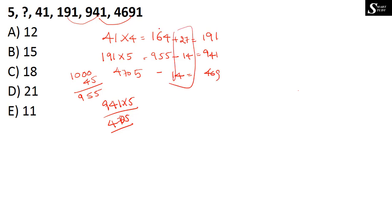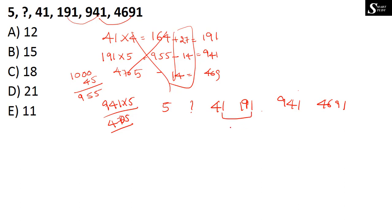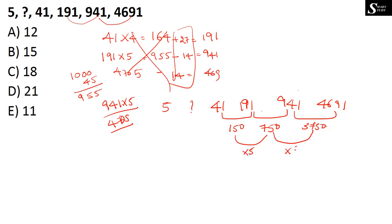Let's try taking the differences. 191 minus 41 is 150; 941 minus 191 is 750; 4691 minus 941 is 3750. Now: 150 into 5 is 750, 750 into 5 is 3750. Working backwards: 3750 ÷ 5 = 750, 750 ÷ 5 = 150, 150 ÷ 5 = 30. Subtract 30 from 41, giving 11.